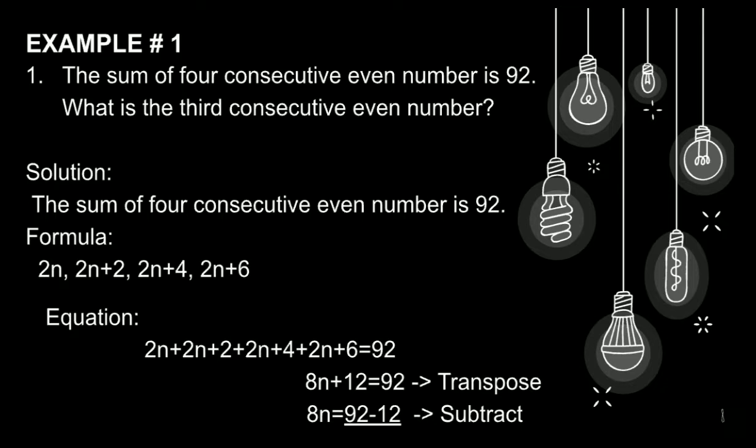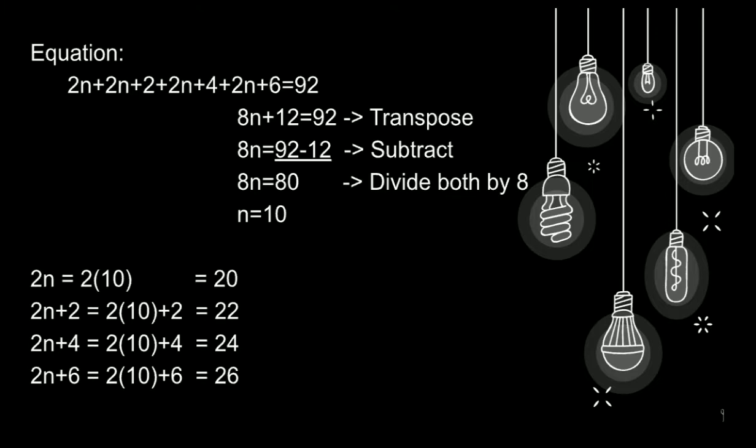Pagkatapos nito, ay itatranspose natin siya. Bring down muna yung 8n is equals to 92 minus 12. Nagiging negative 12 na siya dito since nung nasa una siya ay positive siya. Pagkatapos nito, ay i-subtract natin yung 92 and 12. So, bring down muna yung 8n, and then, 92 minus 12 is 80. Para ma-isolate natin yung n, ay i-divide natin siya both by 8. So, 8n divided by 8 is n. And 80 divided by 8 is 10.